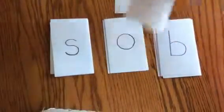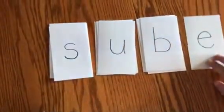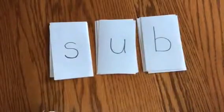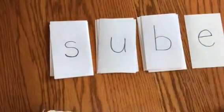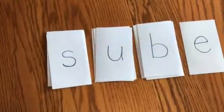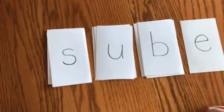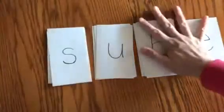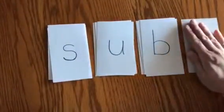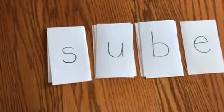Or what you could do is make yourself another key card and teach them the magic e final e rule and say, 'Student number one, this is 'sub.' Student number two, what happens if I add an e at the end? The e makes the u say its name and that's 'sube' as well.' So you could say 'sub,' 'sube.' You can have a lot of fun playing around with this.